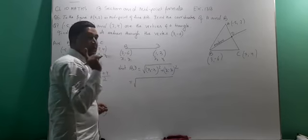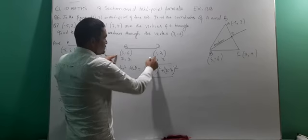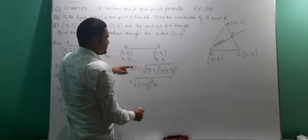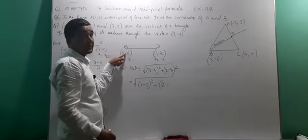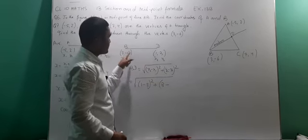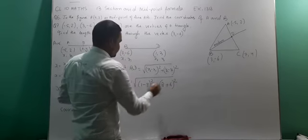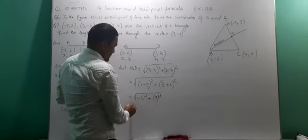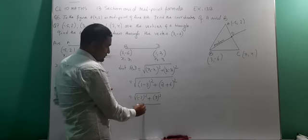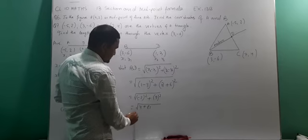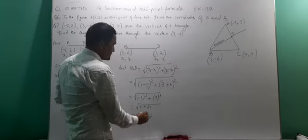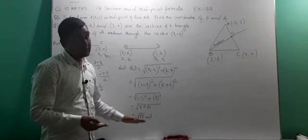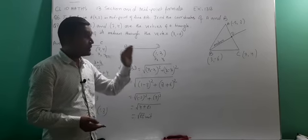Substitute the values with their proper sign — sign is very important. x2 is 1, minus x1 which is 3, then squared, plus y2 is 3, minus y1 which is minus 6 — minus minus gives plus 6 — then squared. Simplifying: 1 minus 3 is minus 2, squared is 4; 3 plus 6 is 9, squared is 81. So we have the square root of 4 plus 81, which equals the square root of 85 units. This is the length of the median.